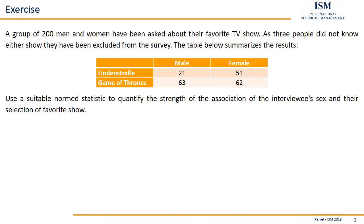A group of 200 men and women have been asked about their favorite TV show. As three people did not know either show, they have been excluded from the survey. The table below summarizes the results. Use a suitable normed statistic to quantify the strength of the association of the interviewees' sex and their selection of favorite show.